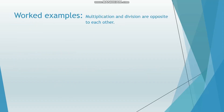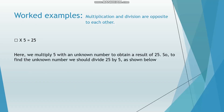Let's see some worked examples. A blank box multiplied by 5 is equal to 25. Here we multiply 5 with an unknown number to obtain a result of 25. So to find the unknown number, we should divide 25 by 5, as shown below. The blank box is equal to 25 divided by 5, which is equal to 5.